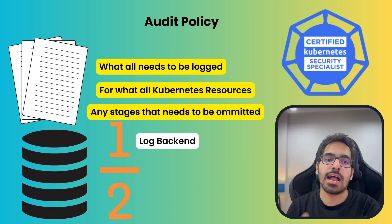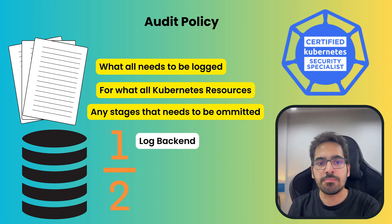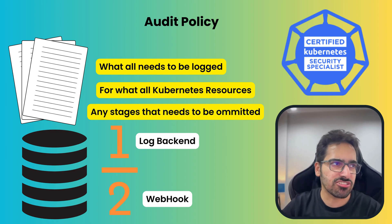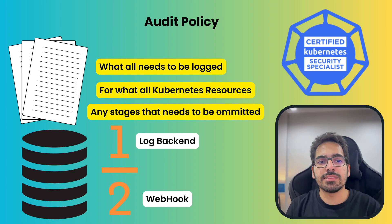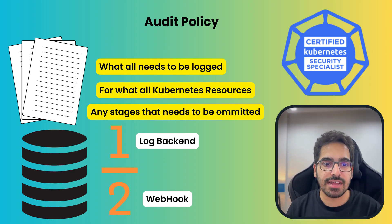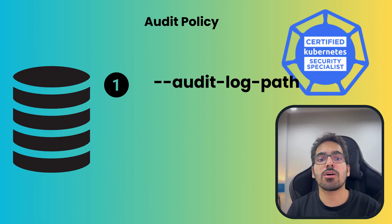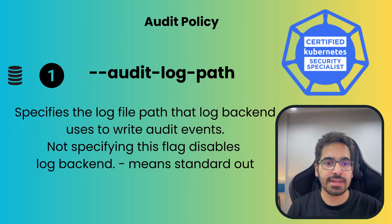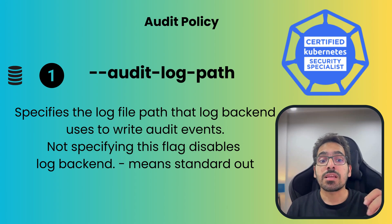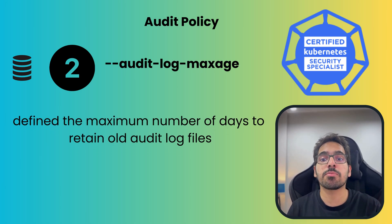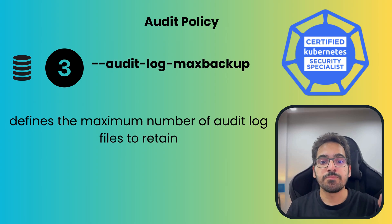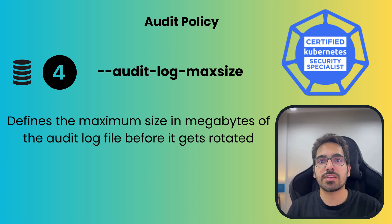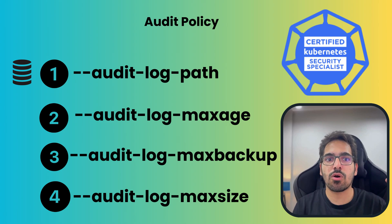Once you define all these, you can choose where to store the logs. There are two audit backends: the log backend, which writes to files, and the webhook, which can send events to an external HTTP API. There are four key API server flags: audit-log-path to specify the log path, audit-log-maxage to define the maximum number of days to retain old logs, audit-log-maxbackup to define the maximum number of audit log files to retain, and audit-log-maxsize to define the maximum size in MB before the log gets rotated.